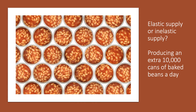It's interesting to ask what makes supply elastic or inelastic. Consider a baked bean manufacturer asked to produce an extra 10,000 cans a day. In reality, the answer is yes — manufacturers with mass production could add an extra shift to their production lines, providing they have stocks of raw materials such as aluminium cans and other resources. Given the capacity to supply, it should be fairly elastic.